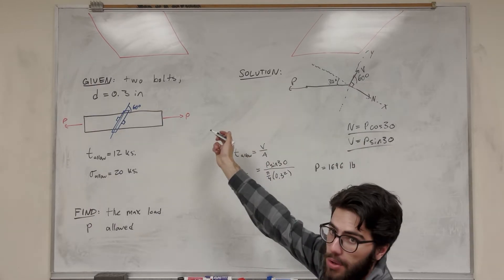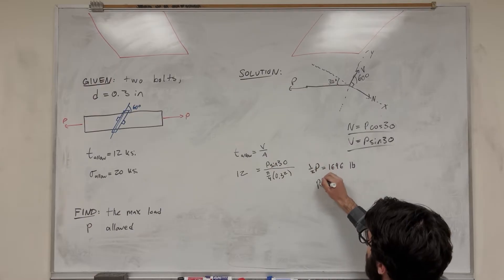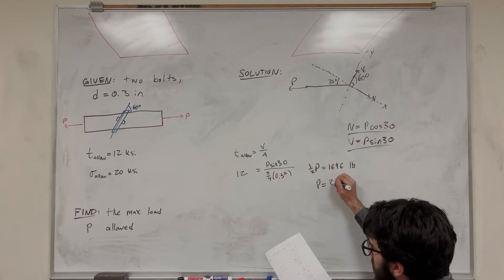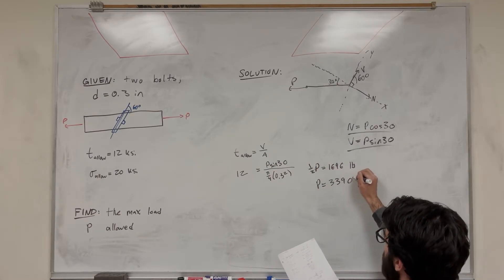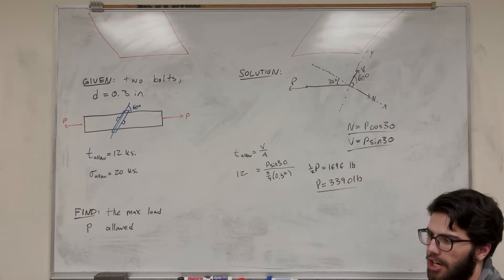But remember we have two bolts, so we're going to need to multiply this by two. So we're going to take 2P, or I guess this is half of P. So then we get the actual force of that is 3390 pounds. So this is the max weight we can apply, assuming that it breaks on shear first.